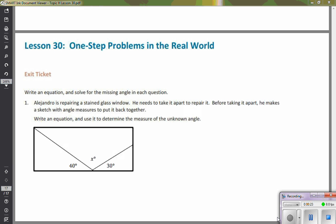For the example I'm going to show you today, it says write an equation and solve for the missing angle in each question. Alejandro is repairing a stained glass window. He needs to take it apart to repair it. Before taking it apart, he makes a sketch with angle measures to put it back together. Write an equation and use it to determine the measure of the unknown angle.